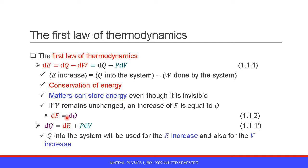Therefore, dE equals dQ, equation 1.1.2. The equation 1.1.1 can also be written as dQ is equal to dE plus P dV. This equation means the heat into the system is used for the internal energy increase and also for the volume increase.